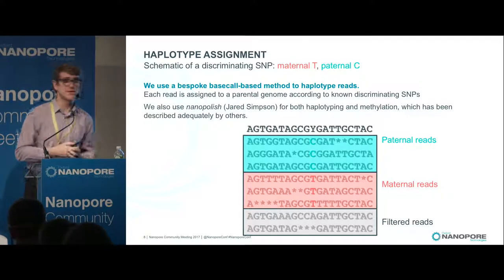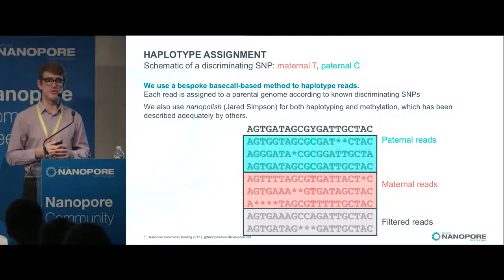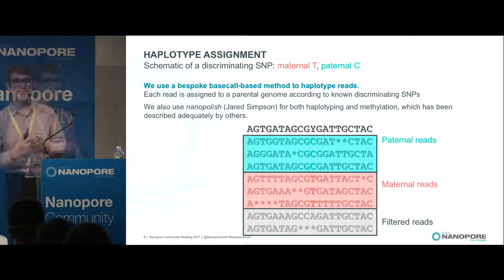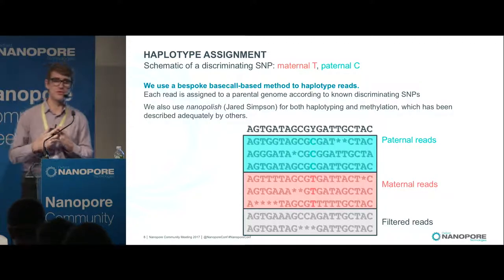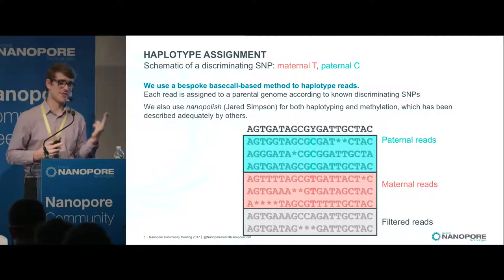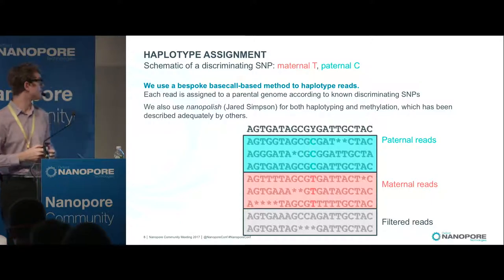We also use Nanopolish — which I believe Jared Simpson just gave a talk on, so I won't go into detail on how it works — but it has methods both for calling haplotypes and for calling methylation, and this is what we use for our methylation detection.